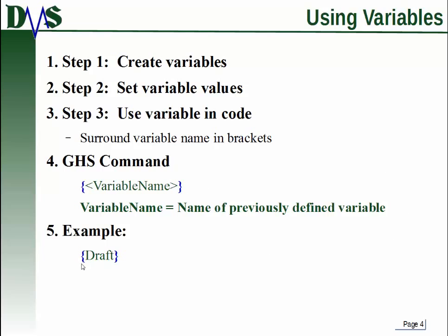For example, this would be a way to use a variable: curly brackets around the name draft. Now of course it has to be the name of a variable you've already created. You can also reference the variables that are built into GHS, but you cannot actually create new variables built into GHS. You can only reference ones that are already created.